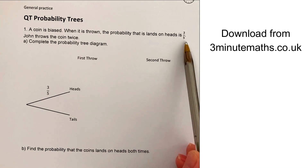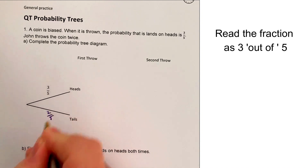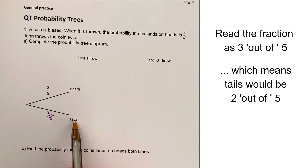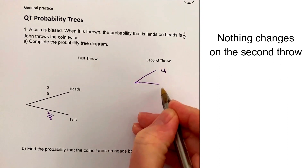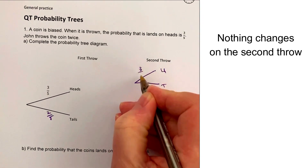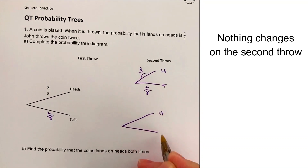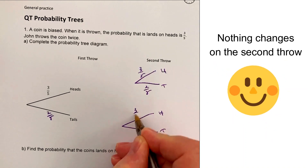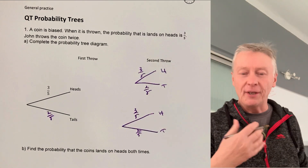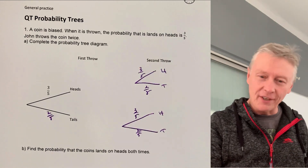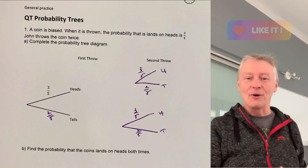When it lands on heads it's 3 out of 5, which means tails is 2 out of 5 on the first throw. On the second throw it's going to be exactly the same — heads and tails 3 out of 5, 2 out of 5, and then heads and tails 3 out of 5, 2 out of 5. That completes the probability tree diagram and gets you about 2 marks.